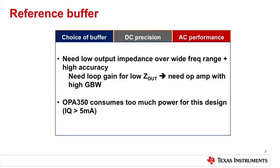This segment covers the choice of buffer, DC precision, and AC performance. As mentioned earlier, we need low output impedance — by that I mean the open-loop output impedance — over a wide frequency range. To achieve that, you really need a high-speed amplifier; not necessarily 300 MHz or GHz range, but over 50 MHz of gain-bandwidth product. With that in mind, we look at the OPA350, which has over 50 MHz GBW and performs fairly well AC-wise.